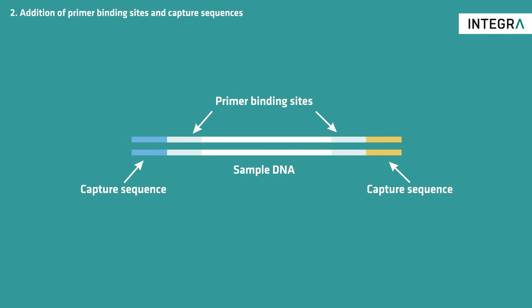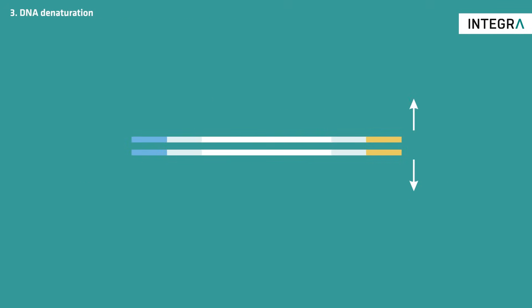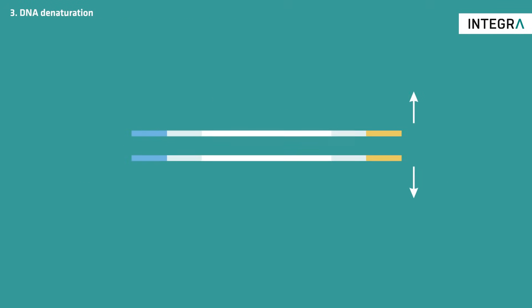Once you have added the adapter sequences to your sample, denature the sequences to separate the two strands from one another.